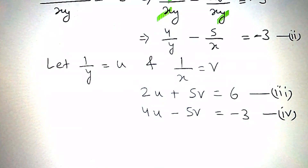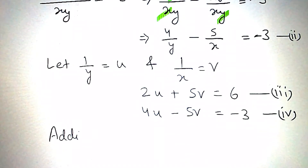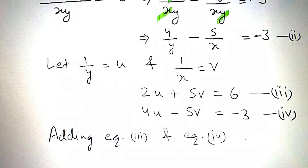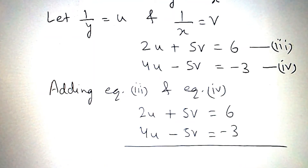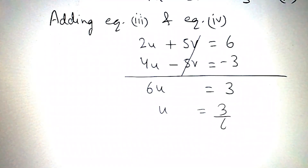By elimination method, adding equation number 3 and equation number 4, the plus 5v and minus 5v will get cancelled. So 2u plus 5v plus 4u minus 5v gives 6u equals 3, that is, u equals 3/6 equals 1/2.